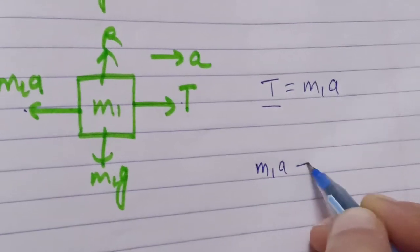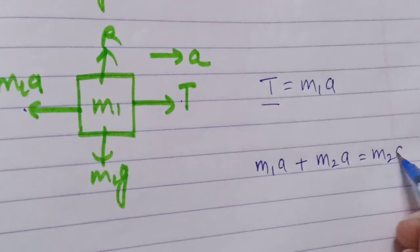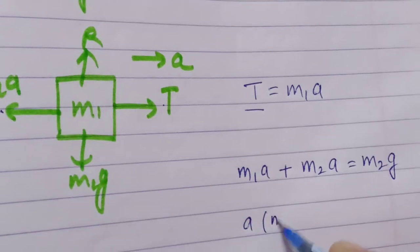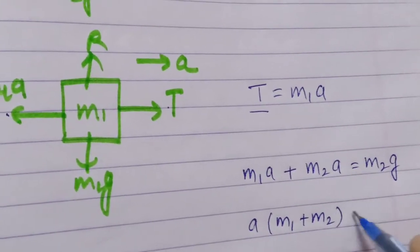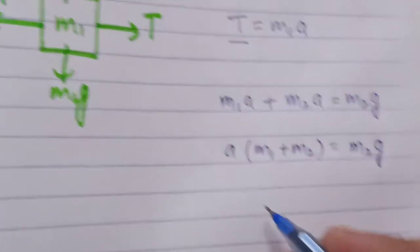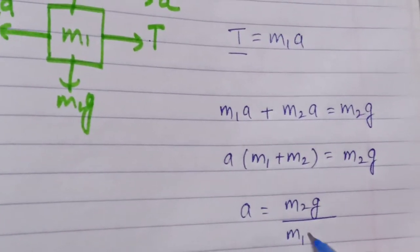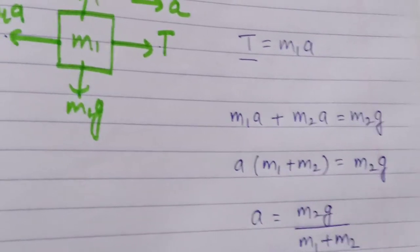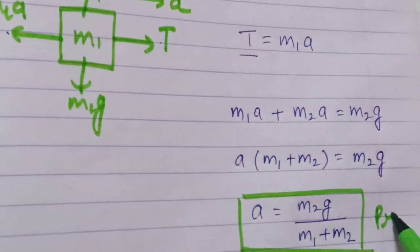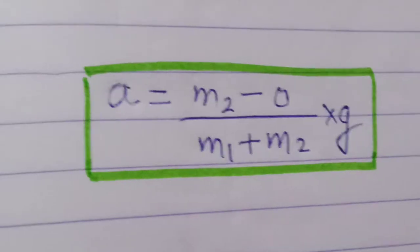a is common, then m1 plus m2 is equal to m2 g. a is equal to m2 g upon m1 plus m2. So this is proved. From the short trick we find this.